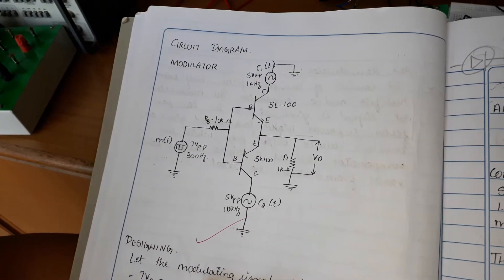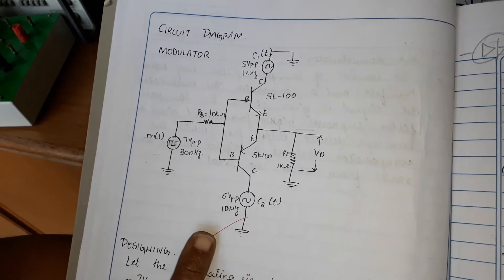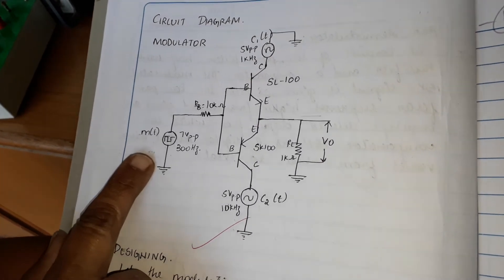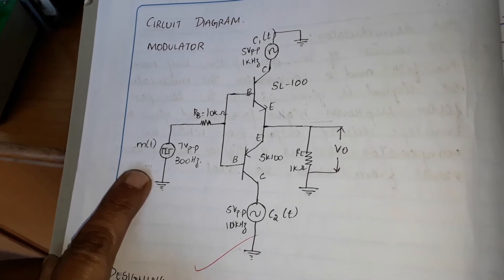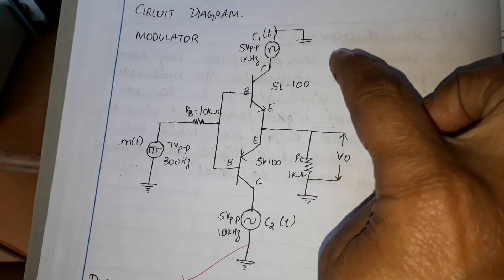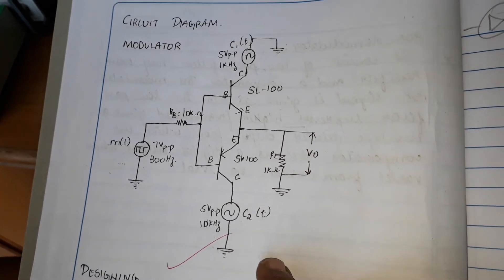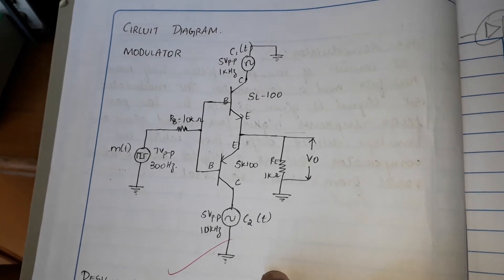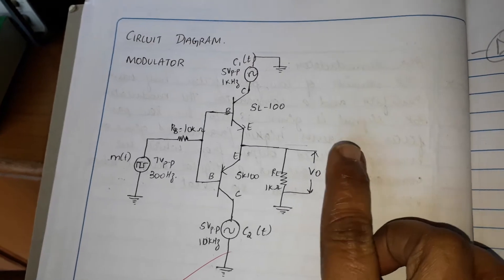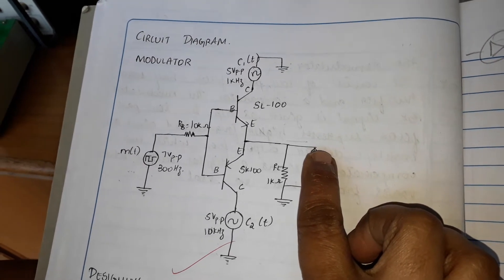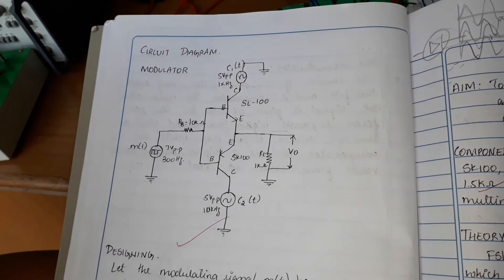Good morning. Today we will see the demo for Frequency Shift Keying. The circuit is as shown here. The message signal, a square wave input, is given at the base of two transistors. A frequency of around 1 kilohertz and a higher frequency is given at the two collectors of the transistors. The output is taken at the emitter of the transistor, which is the FSK output — that is our modulated signal.